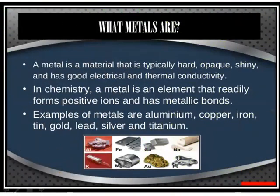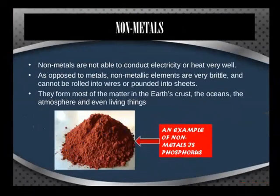A metal is a material that is typically hard, opaque, shiny, and has good electrical and thermal conductivity. In chemistry, a metal is an element that readily forms positive ions and has metallic bonds. Examples are aluminium, copper, iron, tin, gold, lead, silver and titanium. Non-metals are not able to conduct electricity or heat very well. Non-metallic elements are very brittle and cannot be rolled into wires or pounded into sheets. They form most of the matter in the Earth's crust, the oceans, the atmosphere and even living things.